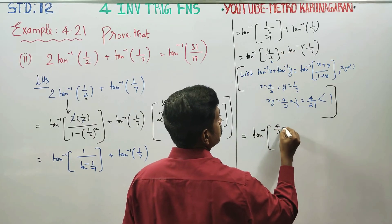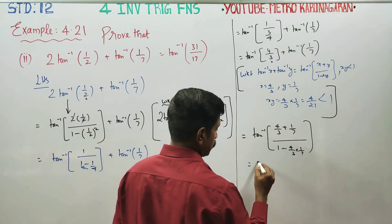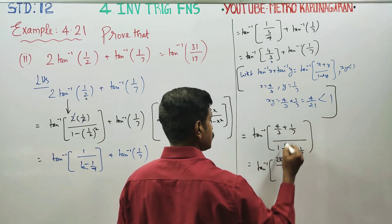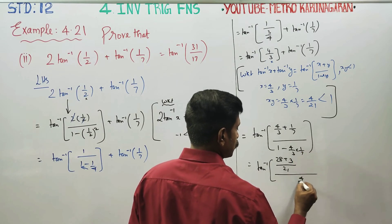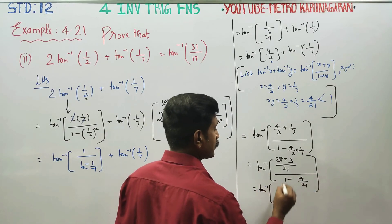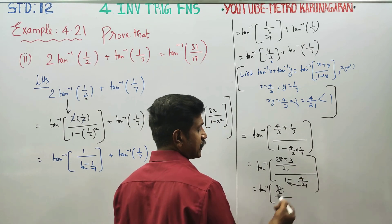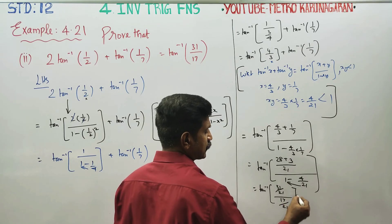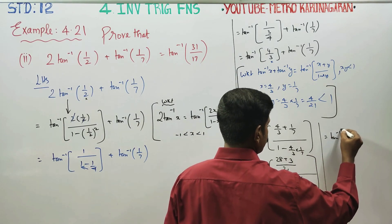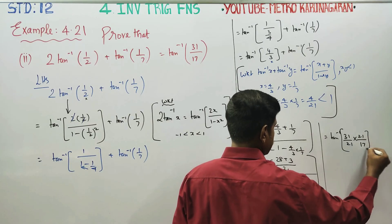Applying the formula with x = 4/3 and y = 1/7: the numerator is 4/3 + 1/7. Finding LCM of 3 and 7 gives 21, so 4/3 + 1/7 = 28/21 + 3/21 = 31/21. The denominator is 1 - (4/3)(1/7) = 1 - 4/21 = 17/21. Therefore we get tan⁻¹(31/21 ÷ 17/21), and cancelling 21 gives tan⁻¹(31/17).